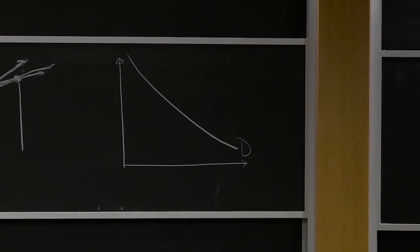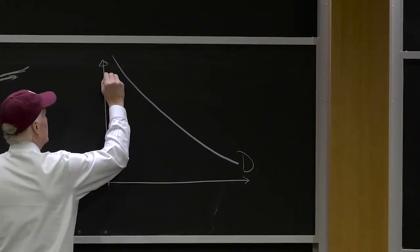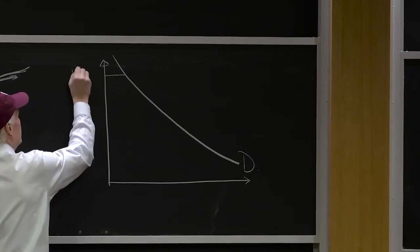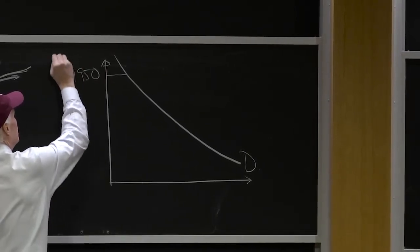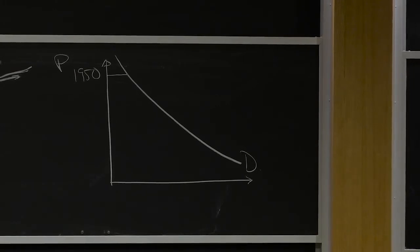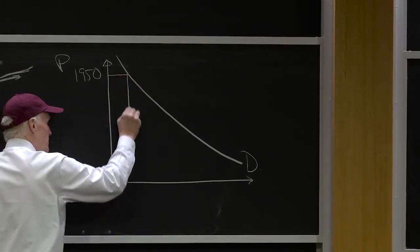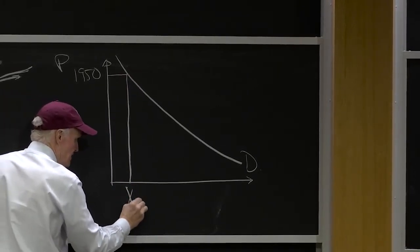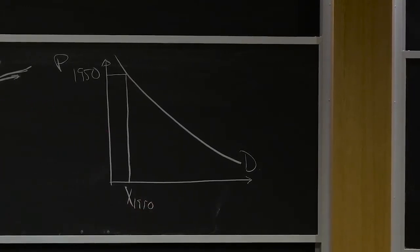You might say, well, here's my world. I got this good. It was really expensive back here. This is P1950. Price was really high. And because the price was really high, we didn't buy much of it. X1950.